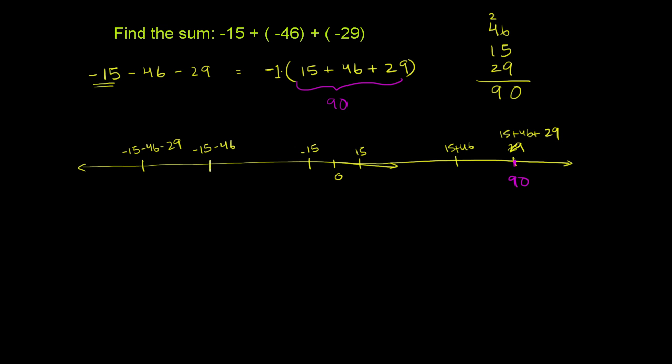And then we're subtracting another 29. So that doesn't get us to 90. That gets us to negative 90. We have this negative 1 out front. So this right over here is negative 90. Anyway, hopefully you found that useful.